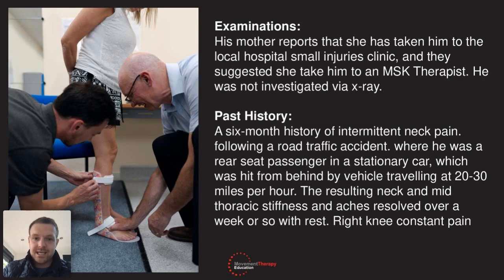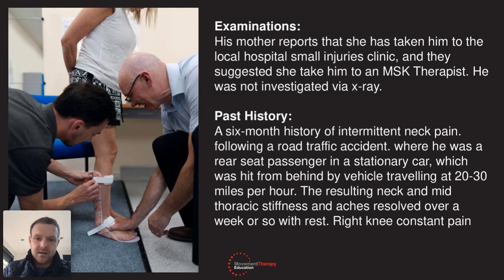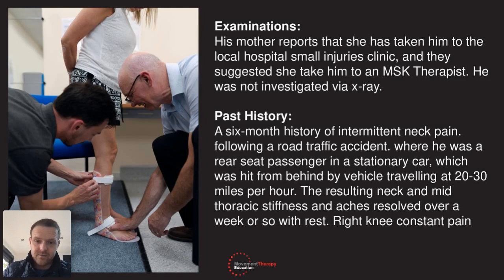His mother reports she has taken him to the local hospital small injuries clinic, and they suggested she take him to see an MSK therapist — they assumed it was a musculoskeletal problem. He was not investigated via X-ray in the hospital. Past six months: a six-month history of intermittent neck pain following a road traffic accident where he was a rear seat passenger in a stationary car hit from behind by a vehicle travelling at 20 to 30 miles an hour. The resulting neck and mild mid-thoracic stiffness and aches resolved over a week or so with rest, but the right knee is in constant pain.